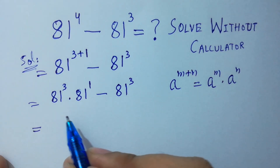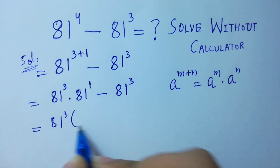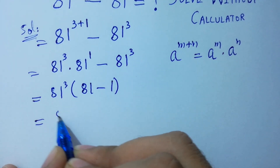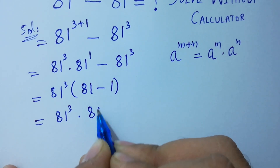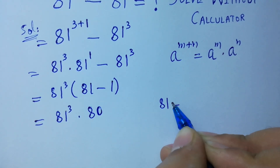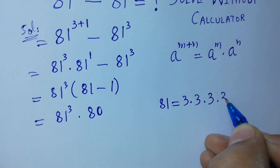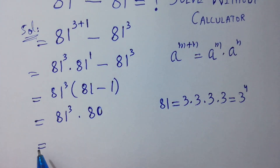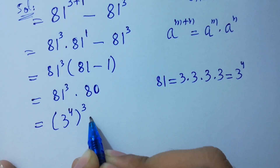Next, 81 cubed is common, so we factor it out: 81 cubed times (81 minus 1), which is 81 cubed times 80. As we know, 81 equals 3 times 3 equals 9, times 3 equals 27, times 3 equals 81, which means 81 equals 3 to the power 4. So it will be equal to 3 to the power 4, cubed, times 80.